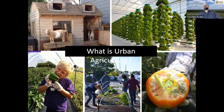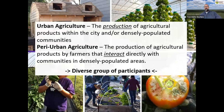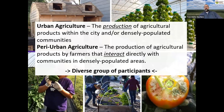Most of the agricultural products that are grown for the urban environment are actually grown in the peri-urban region, which is the area around about. Urban agriculture is the production of agricultural products within the city or densely populated community, whereas peri-urban would be production of those products by farmers specifically for those kinds of regions, but not necessarily within those regions — usually within close proximity. It's typically a pretty diverse group of participants regardless of location.